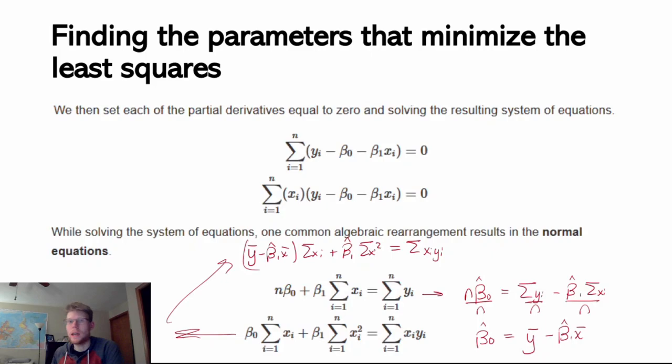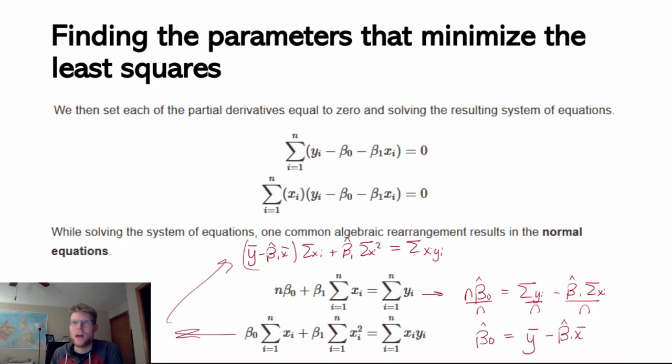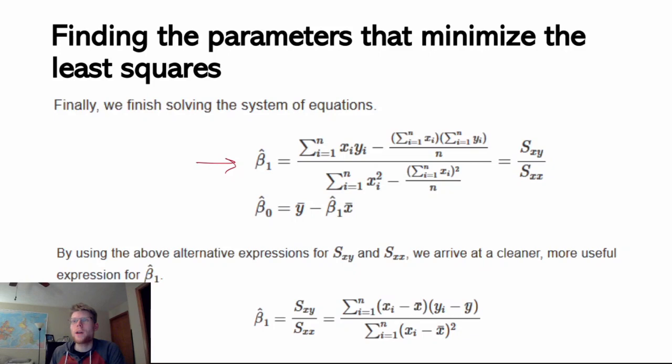If I carry out this algebra and isolate for beta hat 1, I end up with an expression where the terms include the sum of x sub i over n, the sum of x sub i squared over n, and so on. We can get to that representation using some algebra based on that last term.